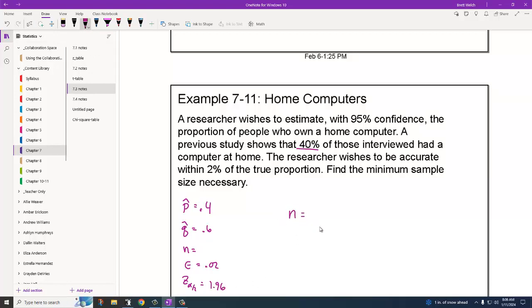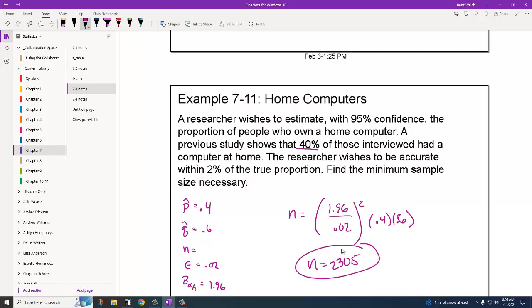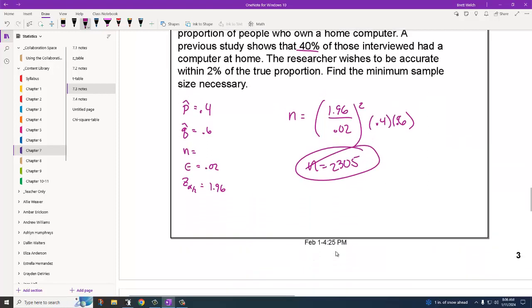Now the number that I need in my sample size is equal to Z alpha over 2, 1.96, divided by the margin of error, 0.02, squared, times P hat, 0.4, times Q hat, 0.6. All we need to do is plug that into our calculator. 1.96 divided by 0.02, that needs to be squared, and then times by 0.4 and 0.6 to give me 2304.96. We're always going to round this number up, so I'm going to come up with 2305. We need a sample that's at least that big in order to guarantee those parameters.